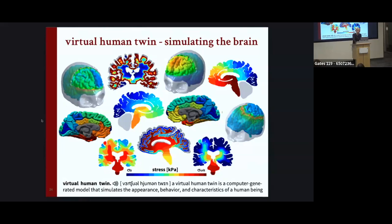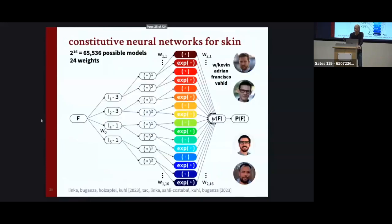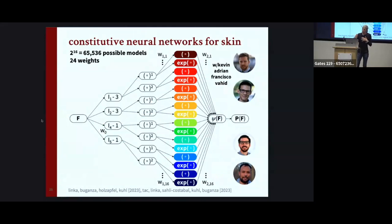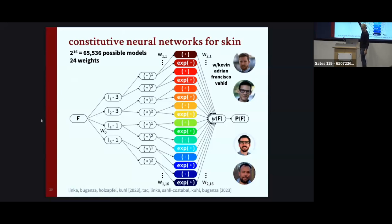The next thing people said was: okay, it works for the brain, but some tissues are not like the brain. If you look at skin, you see lines that make it anisotropic — it behaves differently along the wrinkles and orthogonal to them. This is because of collagen fibers, which stiffen the skin in that direction. We handle this by having two extra terms, making a broader range of terms — now we can discover models from 2 to the power of 16, that's 60,000 models — and we do this for skin data.